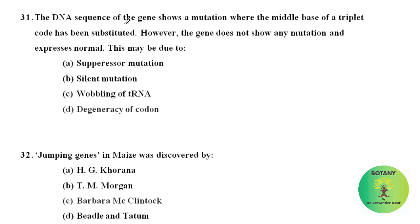The DNA sequence of a gene shows a mutation where the middle base of a triplet code has been substituted; however, the gene does not show any mutation and expresses normally. This may be due to the degeneracy of the codon — degeneracy of the codon is when more than one codon can code for a single amino acid.